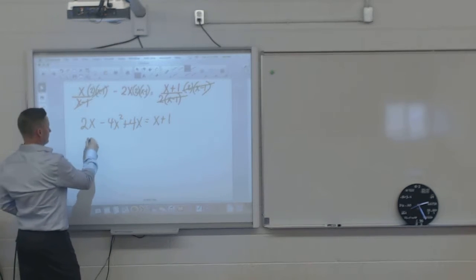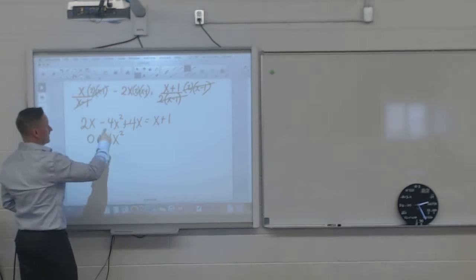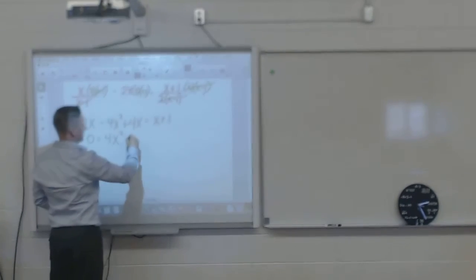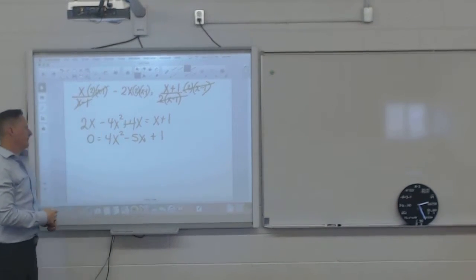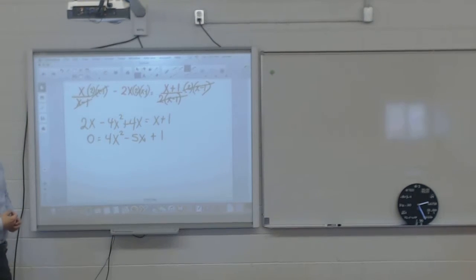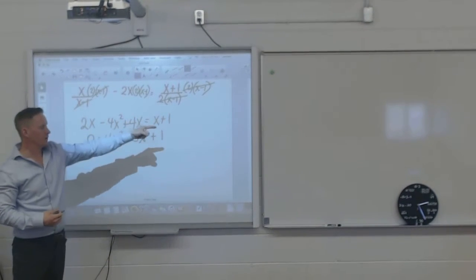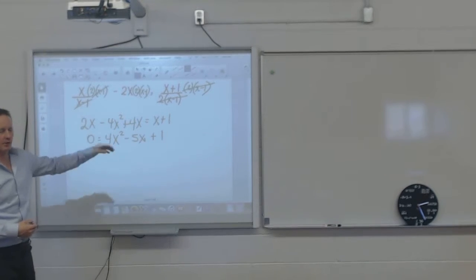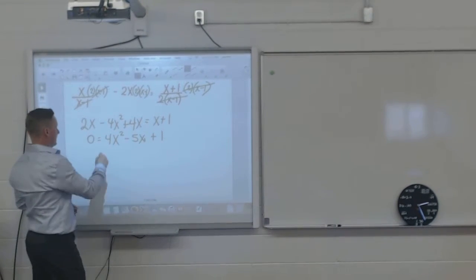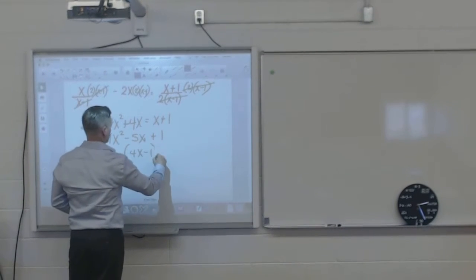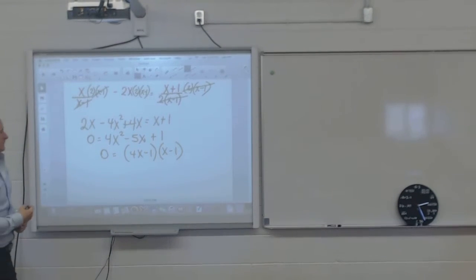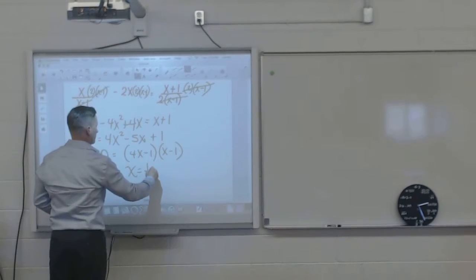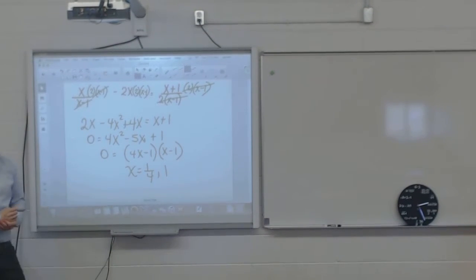Okay? Get it equal to 0. 4x squared on this side. 2x and 4x make 6x. Subtract over there is negative 5x. And it looks like it's add 1. So far, so good? 2x and 4x, I moved over there and subtract it. And I left the 1 on that side. I moved it over to make that positive. Okay? Factorable. That works, doesn't it? So x is equal to a quarter and 1.